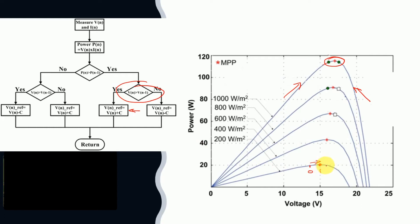With this positive voltage perturbation, the system moves to point number two. Here it sees that the power at point two is less than the power at point one, and since the new voltage is greater than voltage at point one, it decreases the reference voltage by a negative increment −C and operates back near point one. But now, after this perturbation command was given, the system receives a higher level of irradiation.